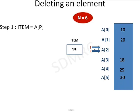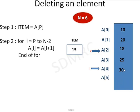When i = p, I get the value of a[i+1], so a[i] = a[i+1]. When i = 3, a[3] = a[4]. When i = 4, a[4] = a[5]. That is why I write the for loop: for i = p to n-2, do a[i] = a[i+1]. End of for.